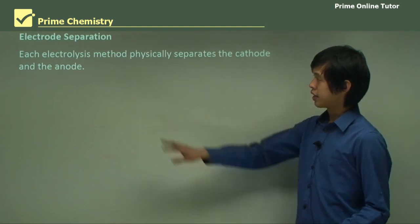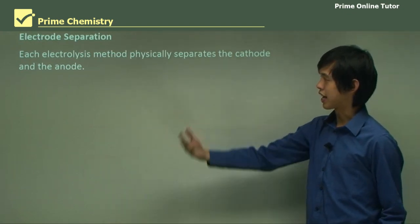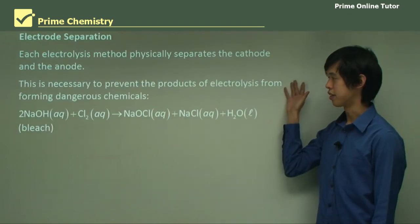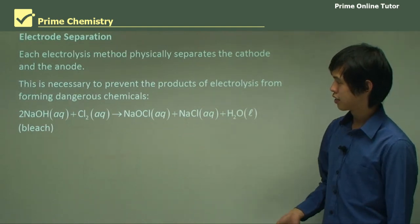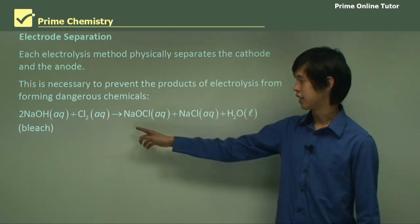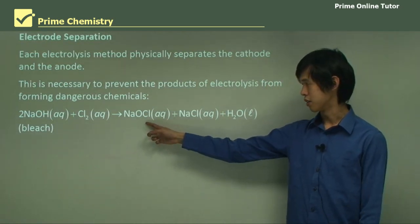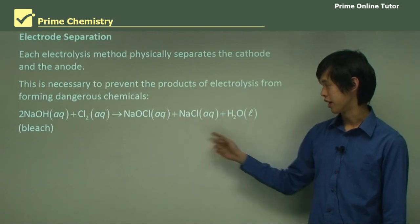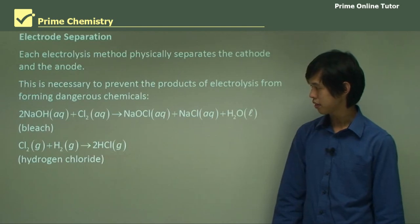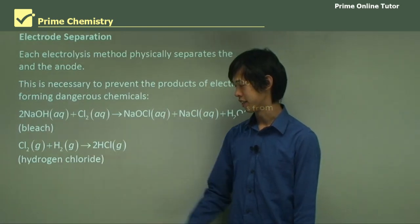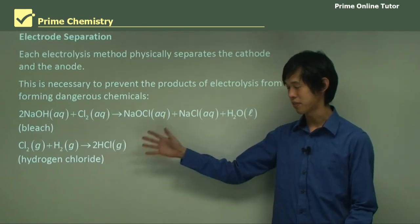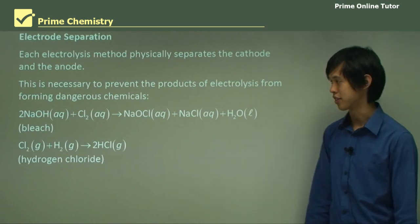Electrode separation: each electrolysis method physically separates the cathode and the anode. This is necessary to prevent the products of electrolysis from forming dangerous chemicals. For instance, NaOH plus chlorine gas gives sodium hypochlorite — which is bleach — plus sodium chloride and water. Chlorine gas plus hydrogen gas could give hydrogen chloride, which is hydrochloric acid. So we separate them to prevent these dangerous chemicals from forming.